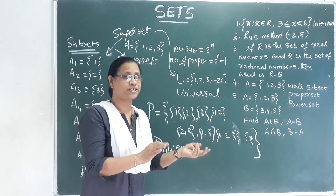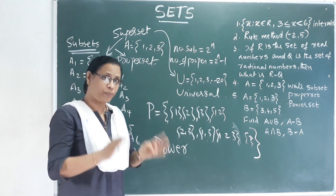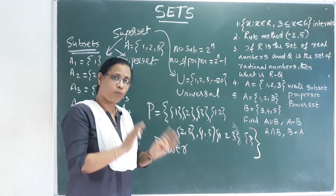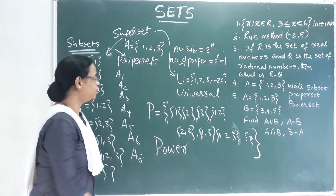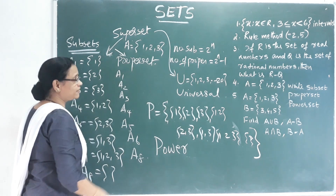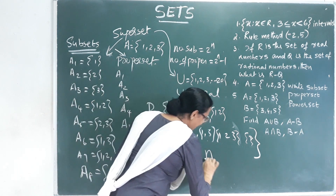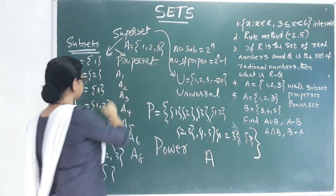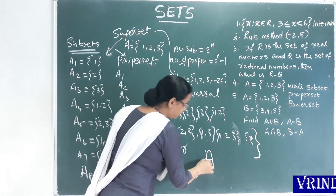Let's set the subset, superset, power set, proper set, universal set. Now, what is the subset? A is the subset of A1, A2, A3, etc. What is the subset of A? Let's say A2 is the subset of A.